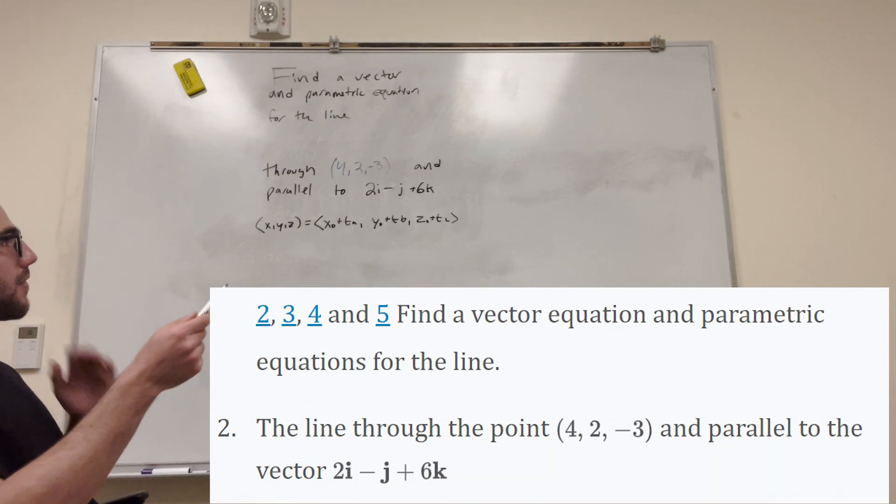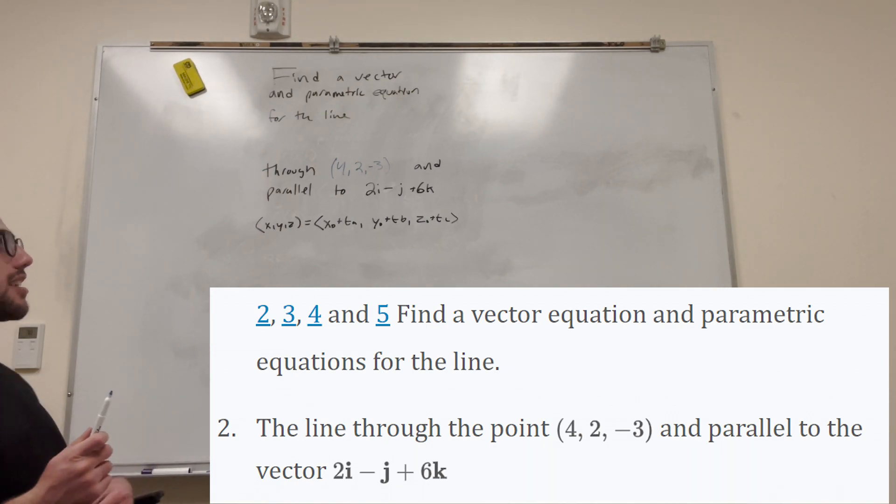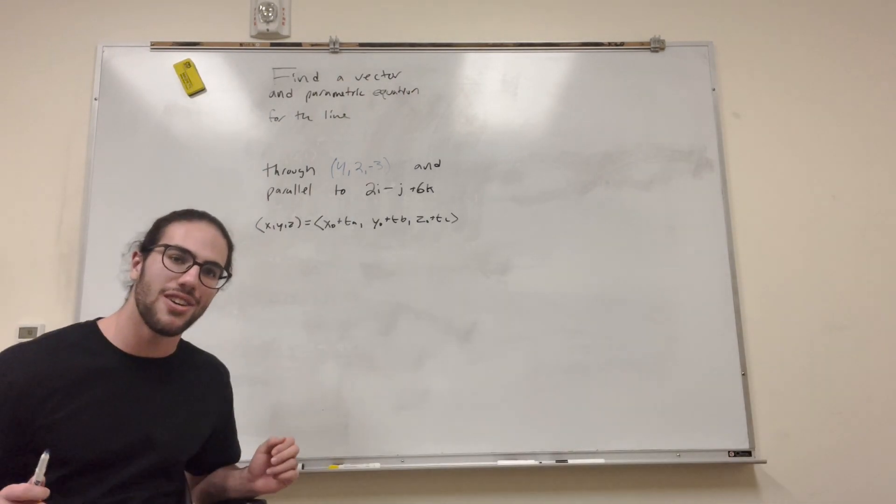So it says through the point 4, 2, negative 3 in parallel to this vector. So we need to first know an equation, basically.